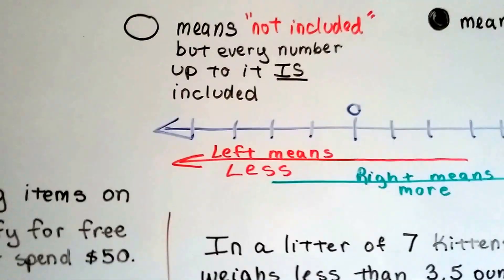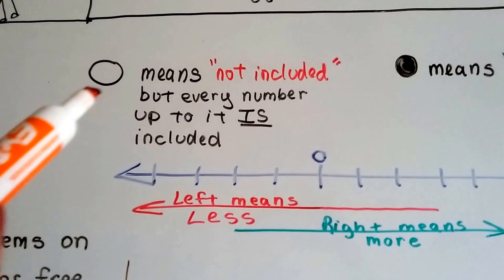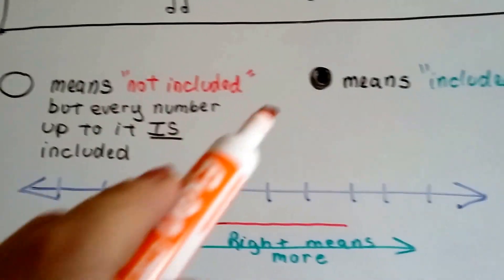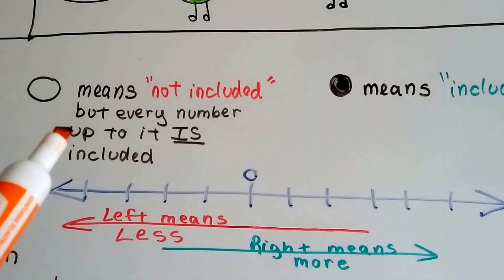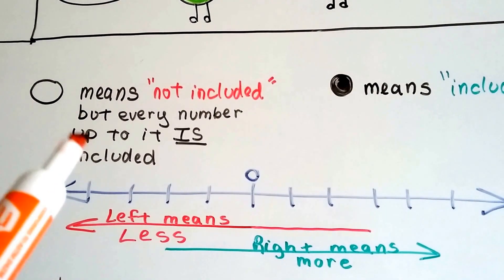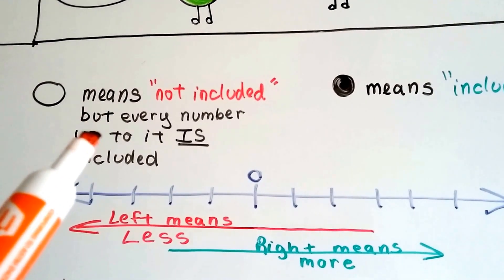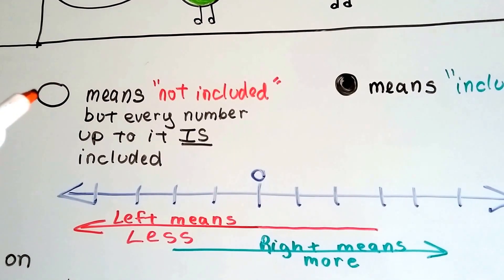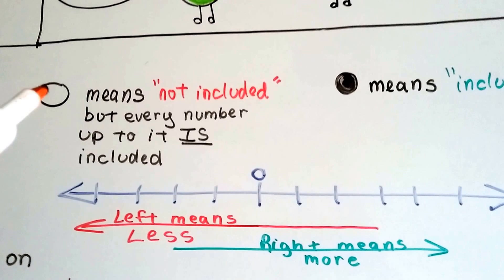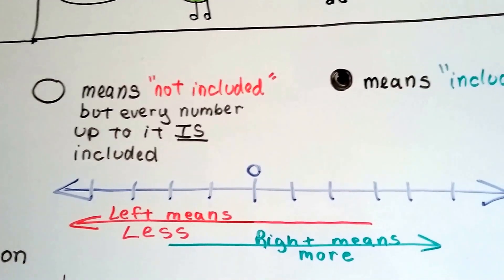So just remember, as we said before in the other videos, if it's an open circle, that means it's not included. And if it's a filled-in circle, that means it's included. But this also means that every minute little fraction or decimal up to that number is included. So maybe 15 is not included, but 14.99 is, and that's when we put the open circle.